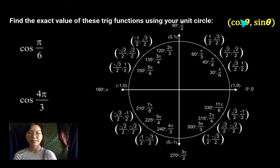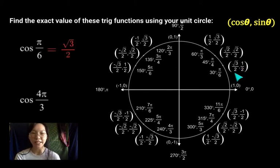So take a look, find pi over 6, and find the x value. Hopefully you found that the x value is square root of 3 over 2.